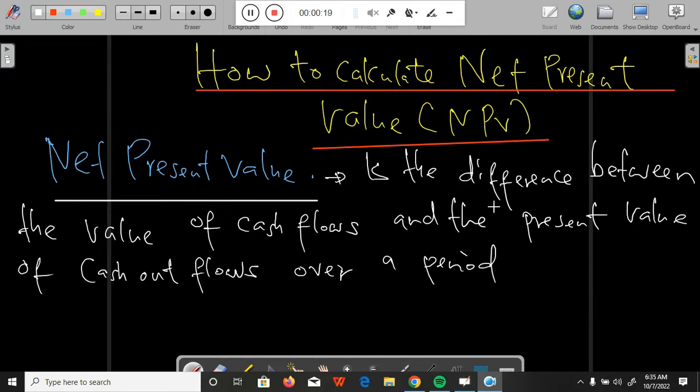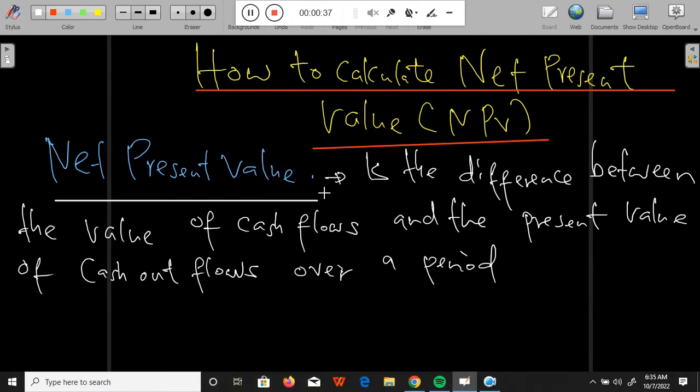What is net present value? Net present value is the difference between the present value of net cash flows from an investment discounted at the required rate of return and the initial investment outlay.